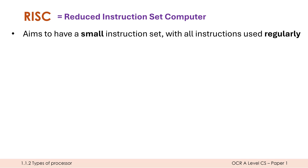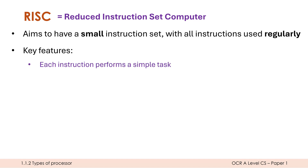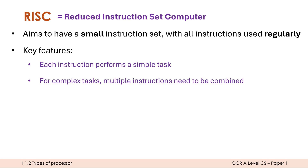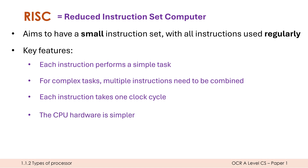RISC stands for Reduced Instruction Set Computer. Key features include: each instruction performs a simple task like add or subtract; more complex tasks like multiply or divide require combining multiple instructions. Each instruction takes exactly one clock cycle, so at 3.2 GHz a RISC CPU executes 3.2 billion instructions per second. The hardware is simpler, needing fewer transistors and making it easier to manufacture.